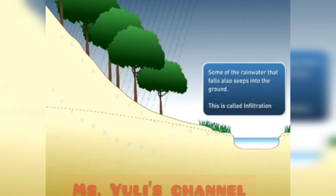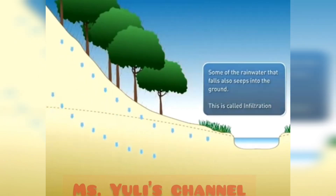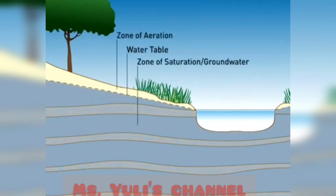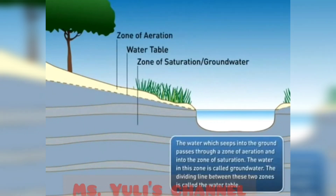Some of the rainwater that falls also seeps into the ground — this is called infiltration. The water which seeps into the ground passes through a zone of aeration and into the zone of saturation. The water in this zone is called groundwater. The dividing line between these two zones is called the water table.